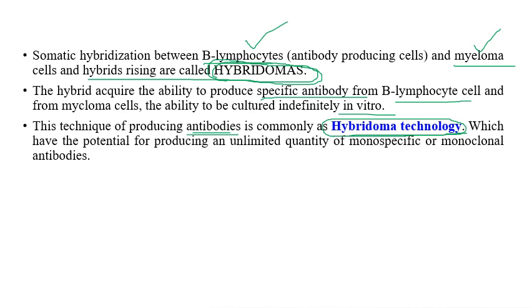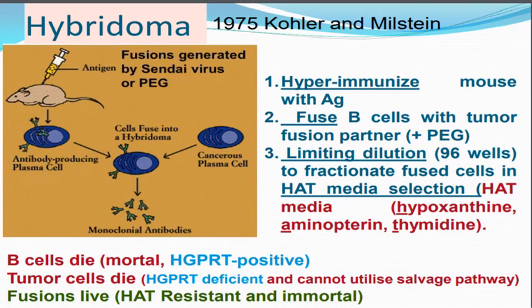Köhler and Milstein discovered hybridoma technology in 1975, for which they received the Nobel Prize in 1984 along with Jerne. The steps involved in hybridoma technology or the production of monoclonal antibodies are: immunization, cell fusion, selection of hybridomas, screening the products, cloning and propagation, and characterization and storage.